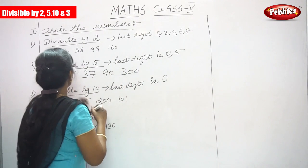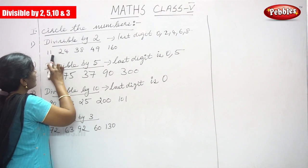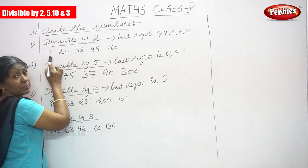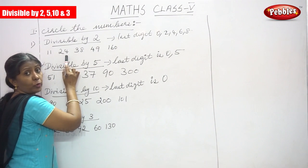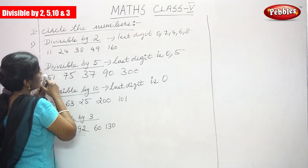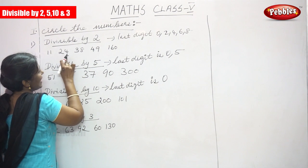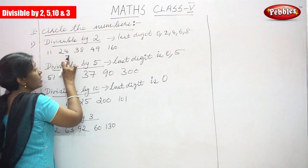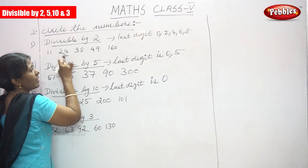First number is 11. The last digit ends with 1, so it is not divisible by 2. Next, 24 — the last digit is 4. The last digit ends with 4, so it is divisible by 2.